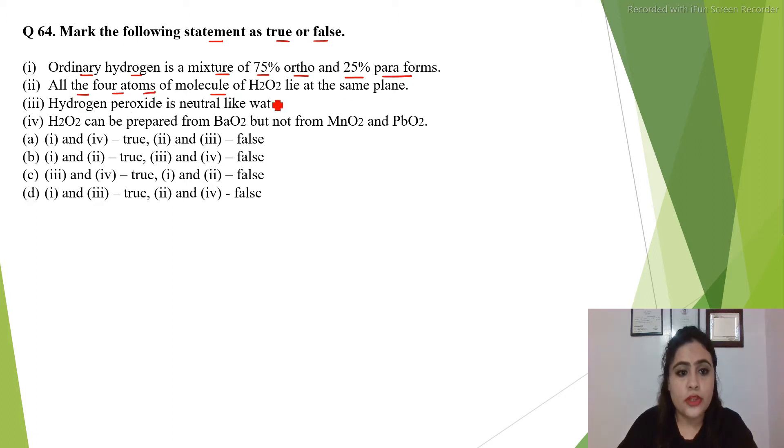All the 4 atoms of molecule of H2O2 lie at the same plane. Hydrogen peroxide is neutral like water.